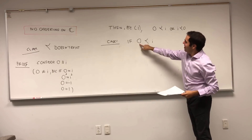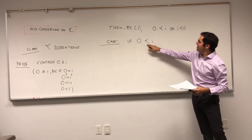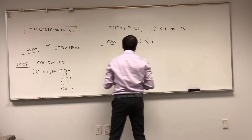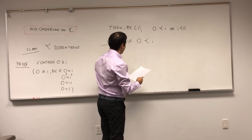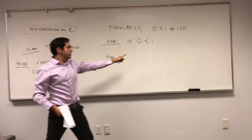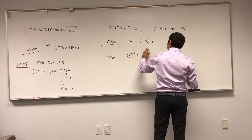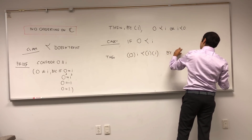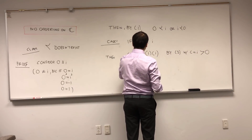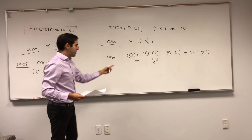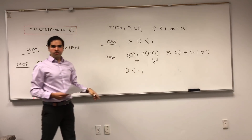Then i becomes a positive number in this ordering, so we can multiply this inequality by i using property 3 with c equals i. We get 0 times i is strictly less than i times i. And so 0 is less than minus 1 in this ordering. Now, it's completely okay if 0 is less than minus 1 here, because I'm not claiming this is the same as the real ordering — that's why I'm using squiggly less-than signs.